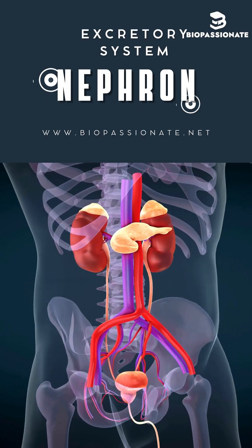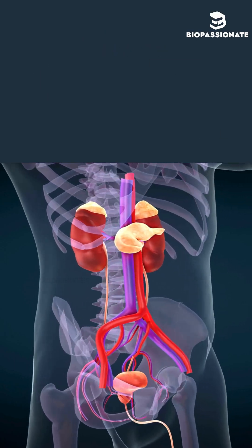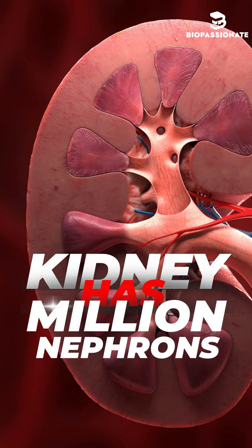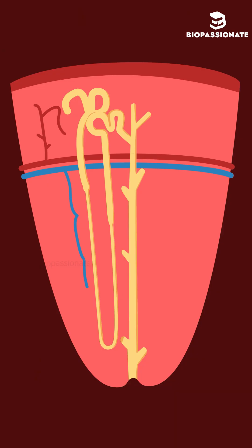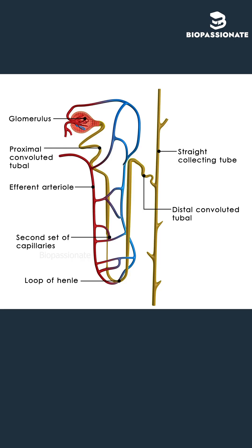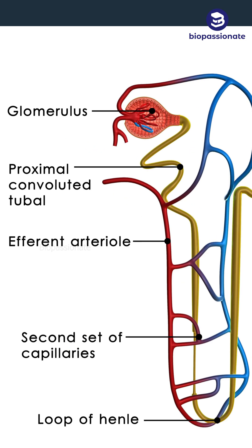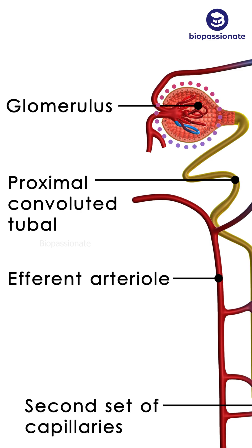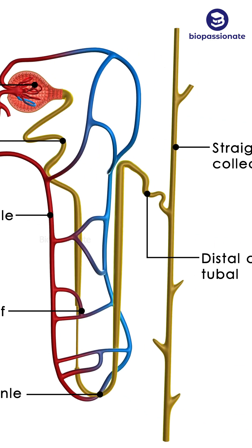Let's understand the structure of a nephron. Each kidney has nearly 1 million complex tubular structures called nephrons, which are the functional units. Each nephron has two parts: the glomerulus and the renal tubule.